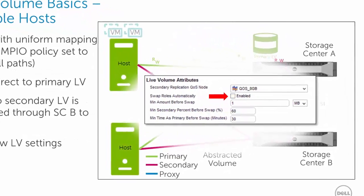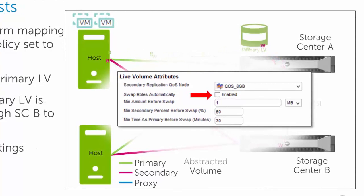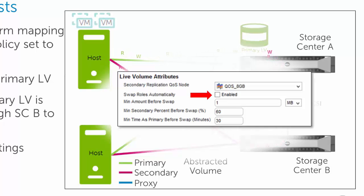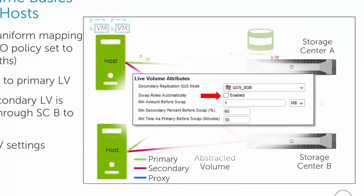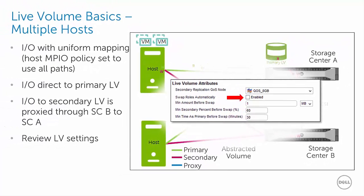It won't hurt anything to leave this option enabled. Not valid just means that with uniform server mappings, the I/O pattern will not trigger a failover if the workload moves to the other host because MPIO Round Robin is sending and receiving I/O equally over all available primary and secondary data paths. Therefore, the data quantity and percentage thresholds won't be exceeded, which is necessary before an automatic role swap can occur. With uniform mappings, we would typically leave the swap roles automatically option disabled, which is the default, and perform a live volume role swap manually.